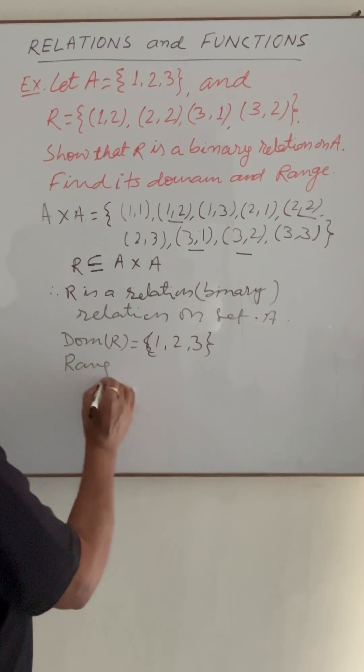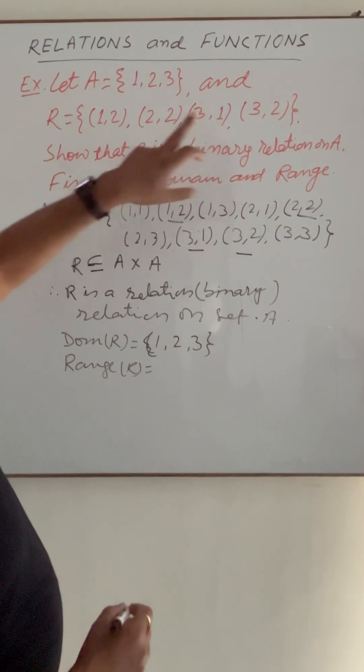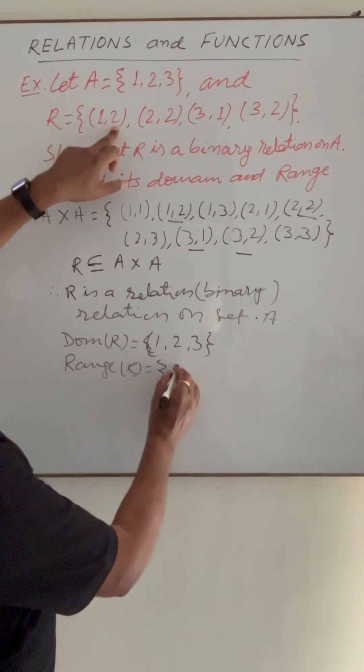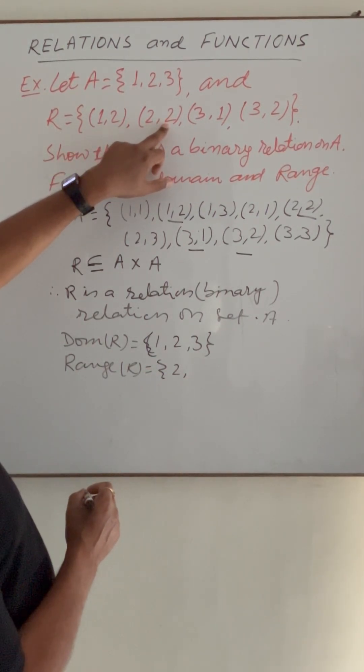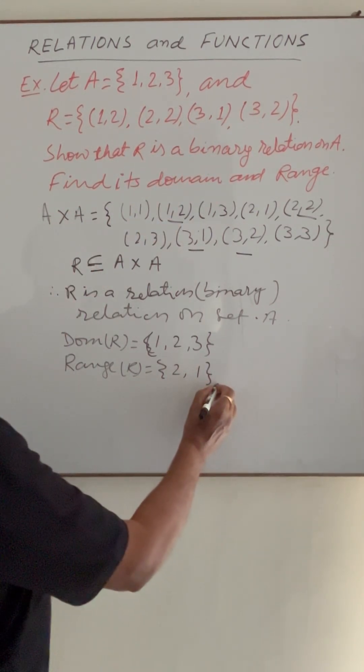And the range of the relation R, second elements of these ordered pairs. So 2, again 2 is here, we will not write it, 1 and 2. So this is a range.